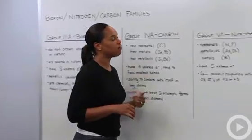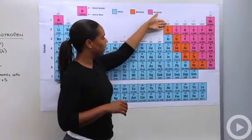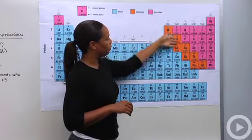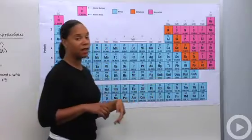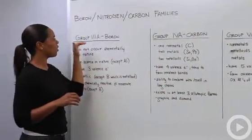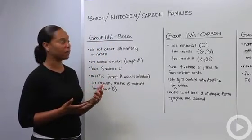Let's point out on the periodic table exactly what we're talking about. The boron family is group 3A, the carbon family is group 4A, and the nitrogen family is group 5A. Starting with boron in group 3A, what kind of properties can we say about the family?